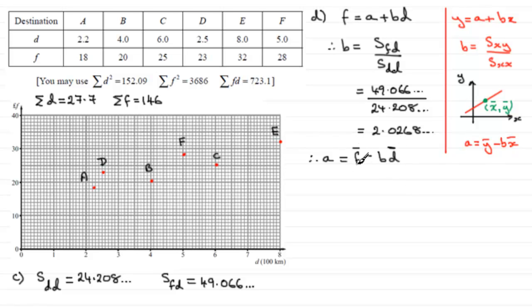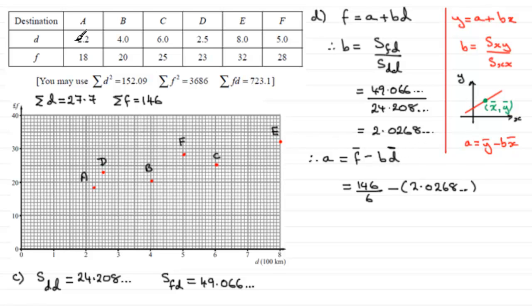How do I get the mean of F? I need to add up all my F-values and divide by how many I've got, which is 6. The sum of F was 146, so we've got 146 divided by 6 for F-bar, minus B — we've got B already, so 2.0268 — and that's multiplied by D-bar, the mean of D. Adding up all the D-values gives 27.7, divided by 6. If you work this out on your calculator, you'll find you get 14.976.